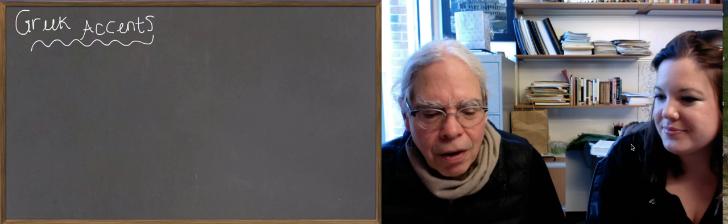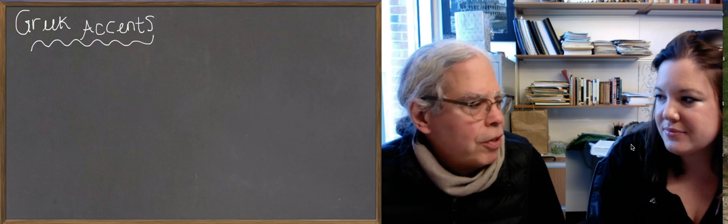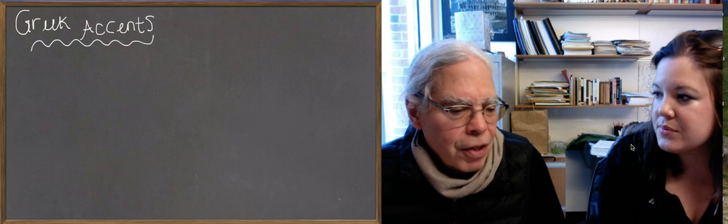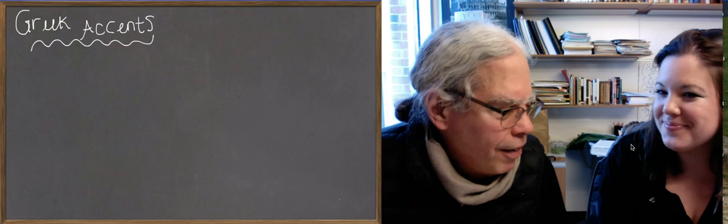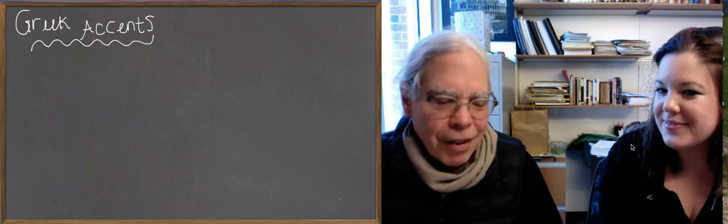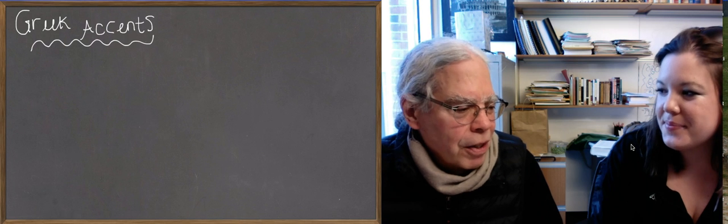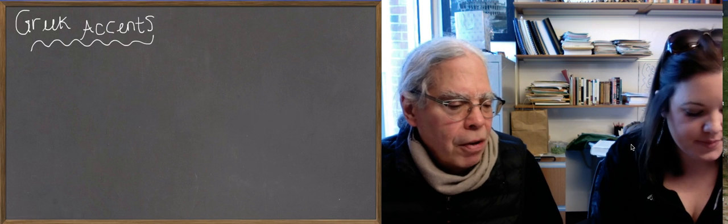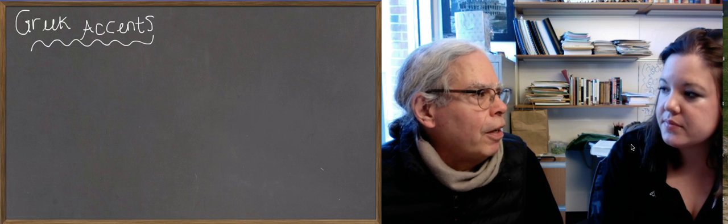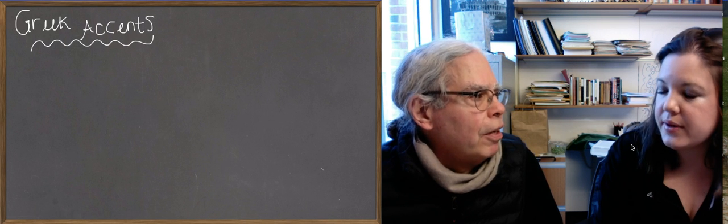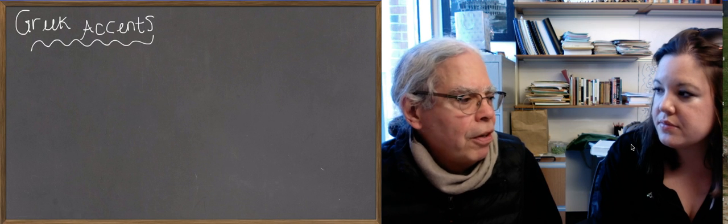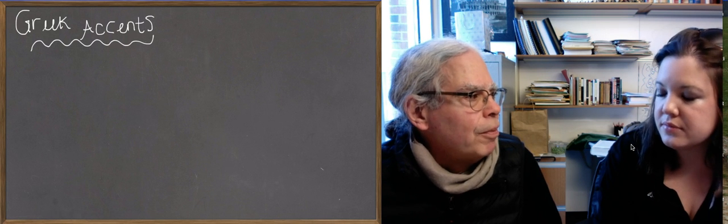A lot of things are different when it's your own language. After the death of Alexander the Great, who conquered lots of Europe and Asia, all kinds of places where people didn't know Greek started learning Greek. When ancient Greeks taught other people Greek, they invented a system of accents.